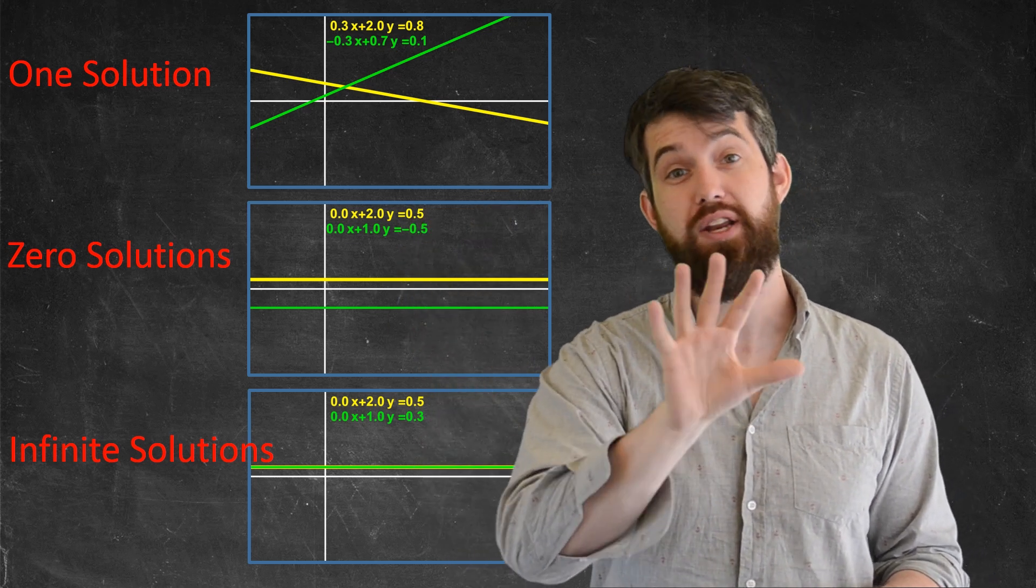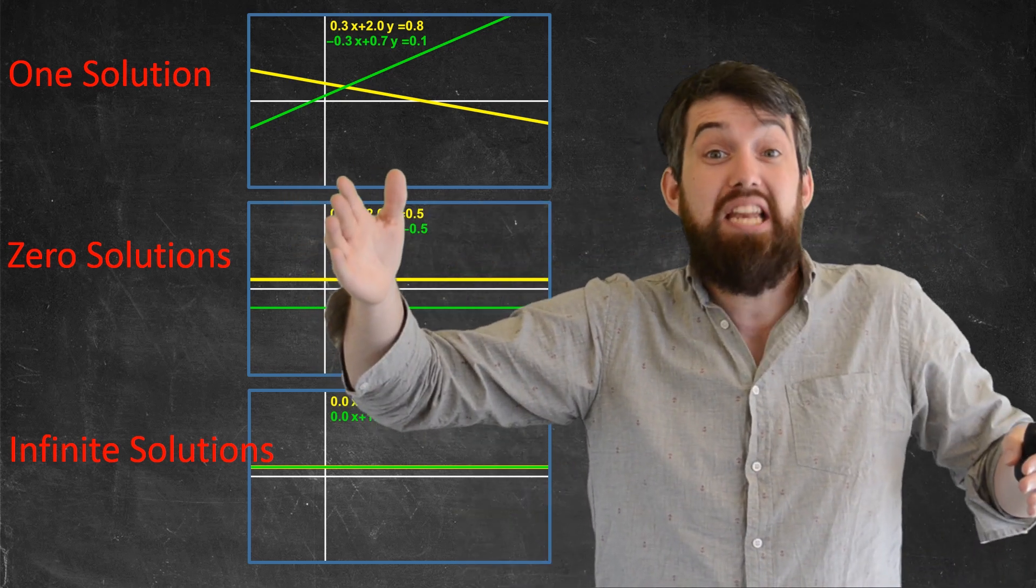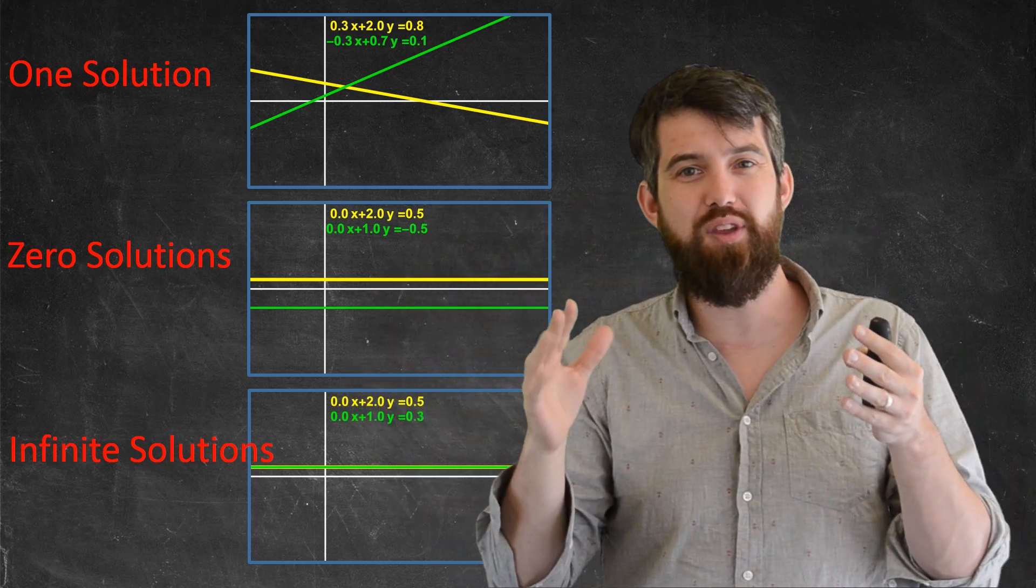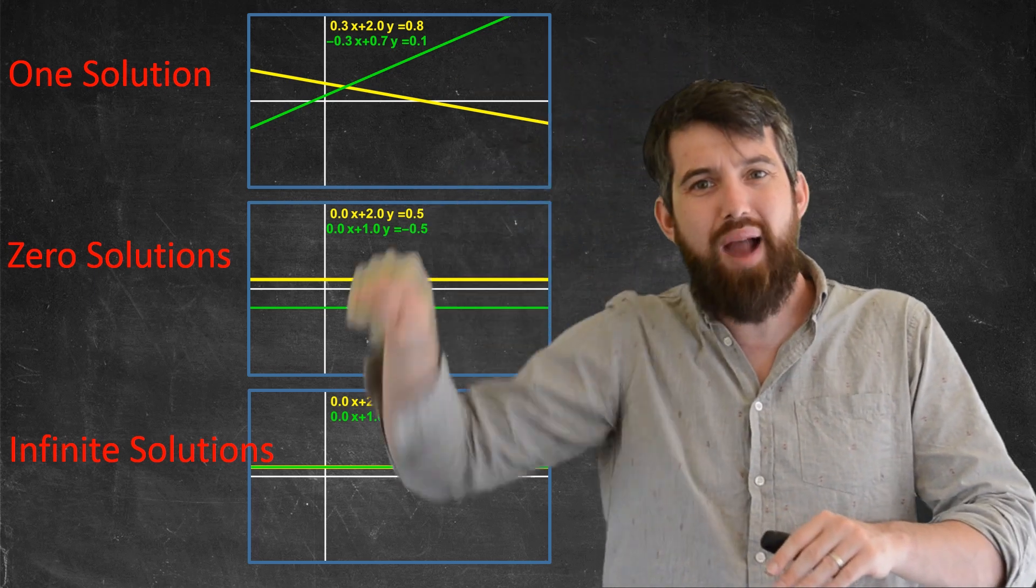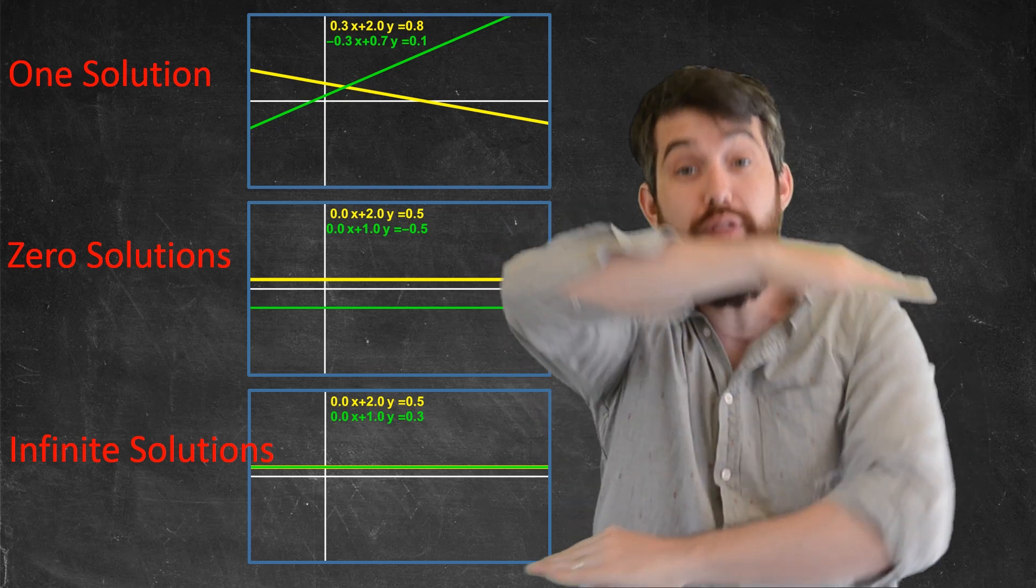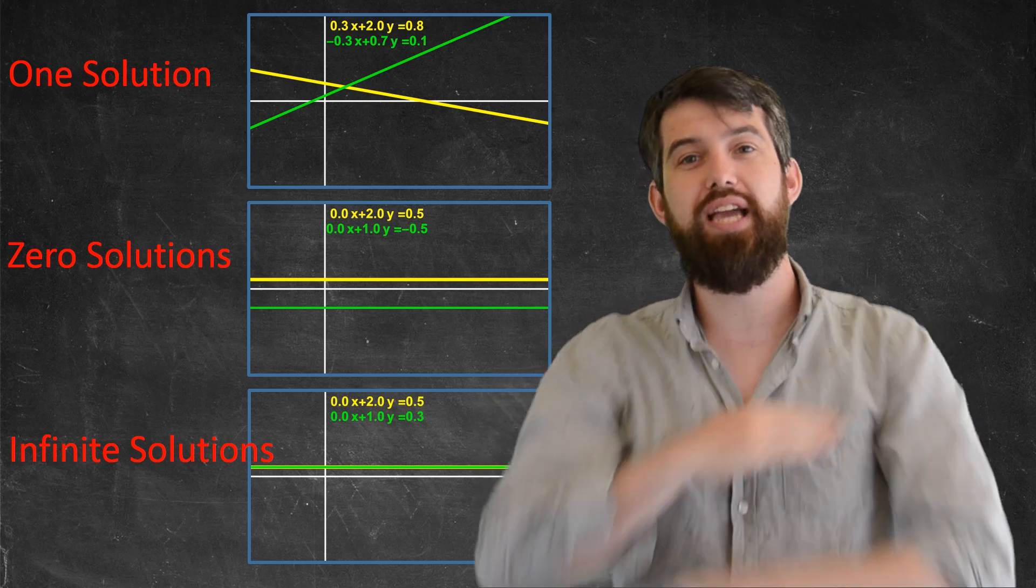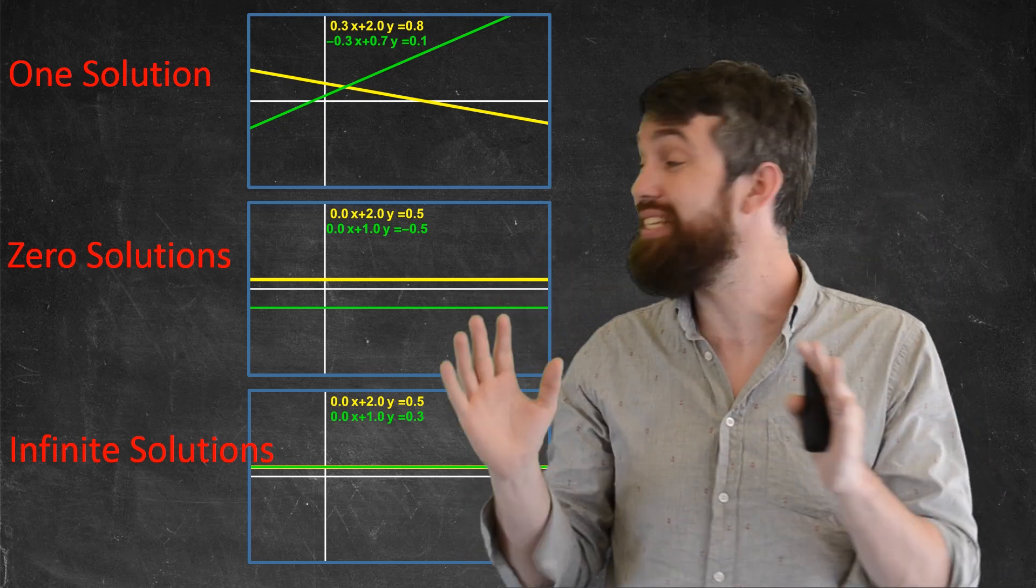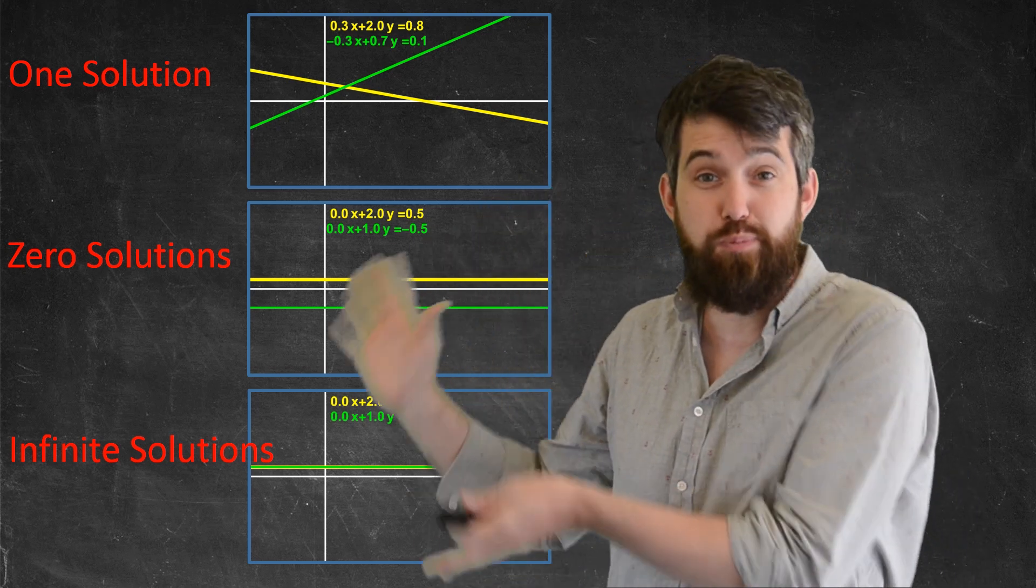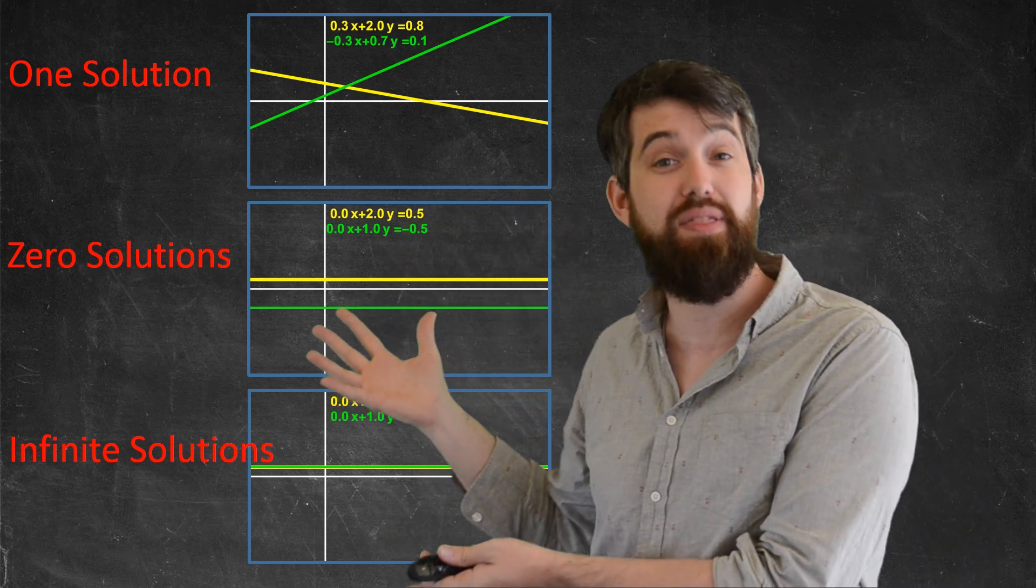Could I have two solutions? If I had two different lines, that's what the individual rows of my linear system are, if I had two different lines, how could they intersect in some way that there was exactly two solutions? They'd have to sort of curve around and hit each other, but they're straight lines, they can't do that. They either have to intersect, in which case there's the one, or they're parallel but offset, in which case there's zero, or they're parallel and on top of each other, in which case there's infinitely many. And so I really get these three cases and only these three cases.